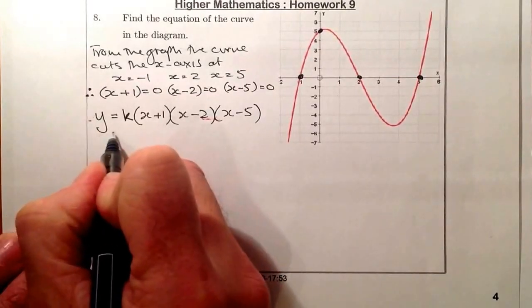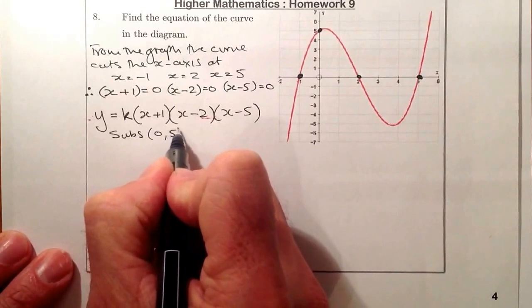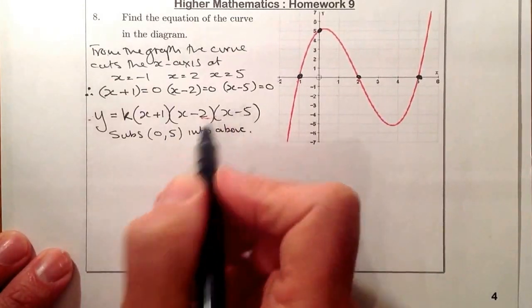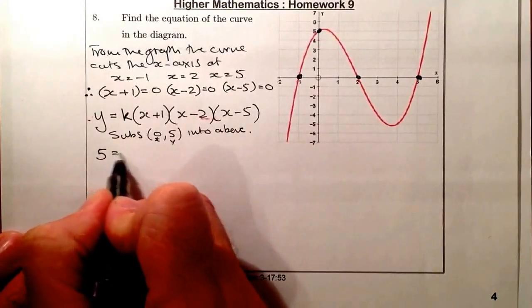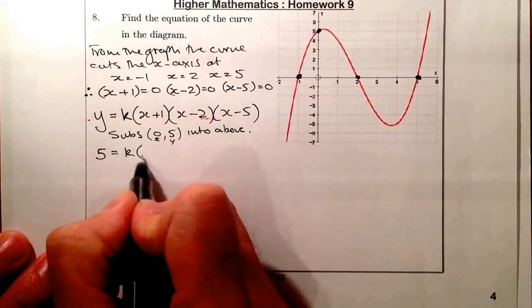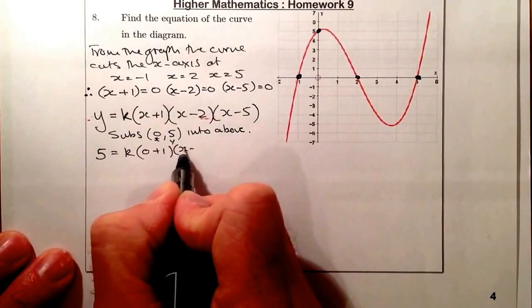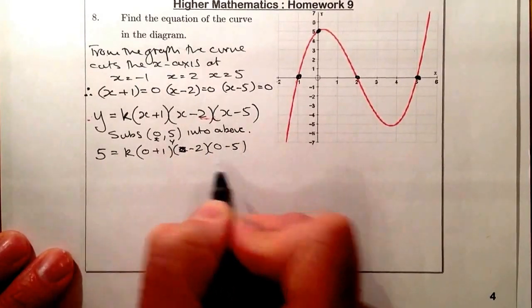So what I'm going to do is substitute the point 0, 5 into the above. So that's my x, and that's my y. So at this side here, I'm going to start with 5 is equal to k, and I'm putting a 0 in wherever I see x. So that's 0, that's a 2, 0, minus 5.